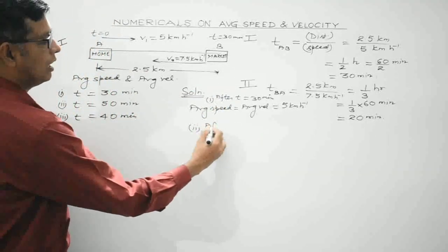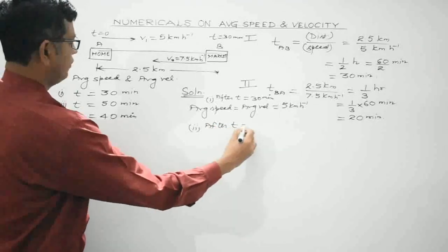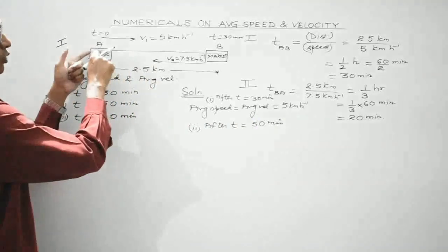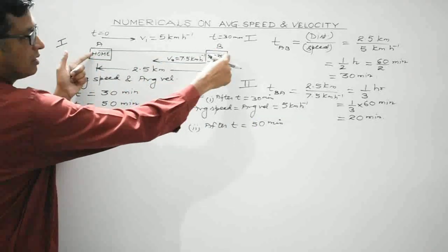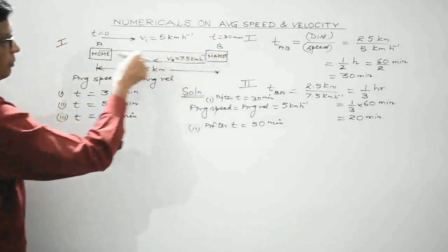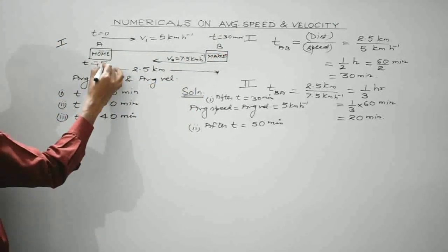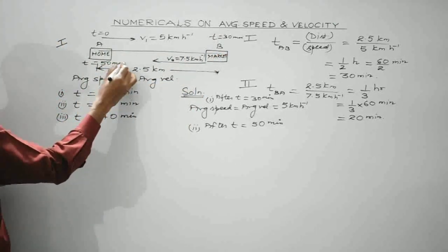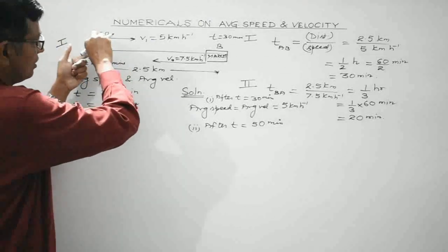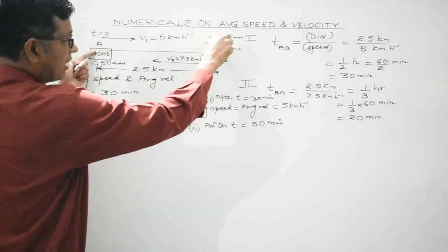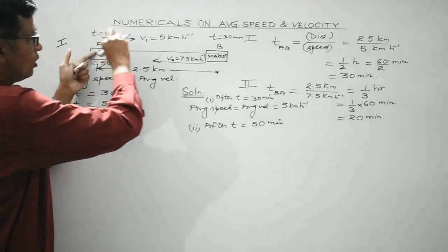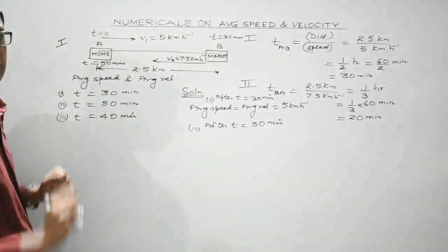For Part 2 — after a duration of 50 minutes — the person takes 30 minutes to go from A to B and another 20 minutes to return from B to A. So he completes a full round trip in 50 minutes, returning to point A.